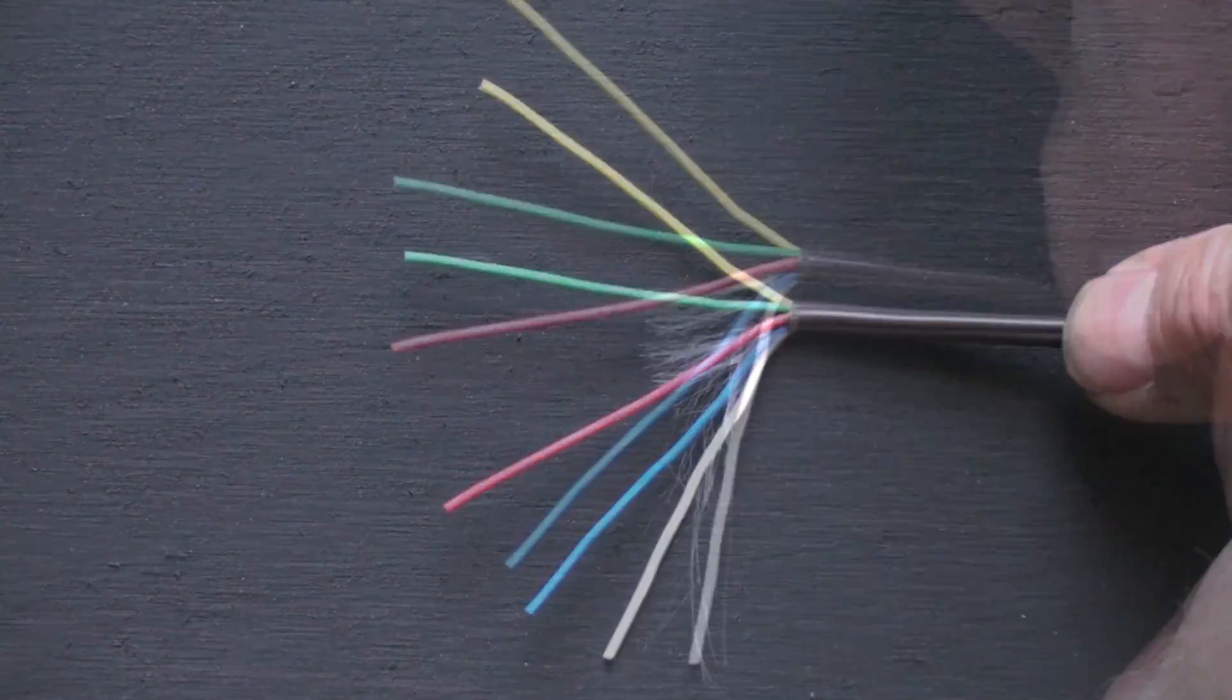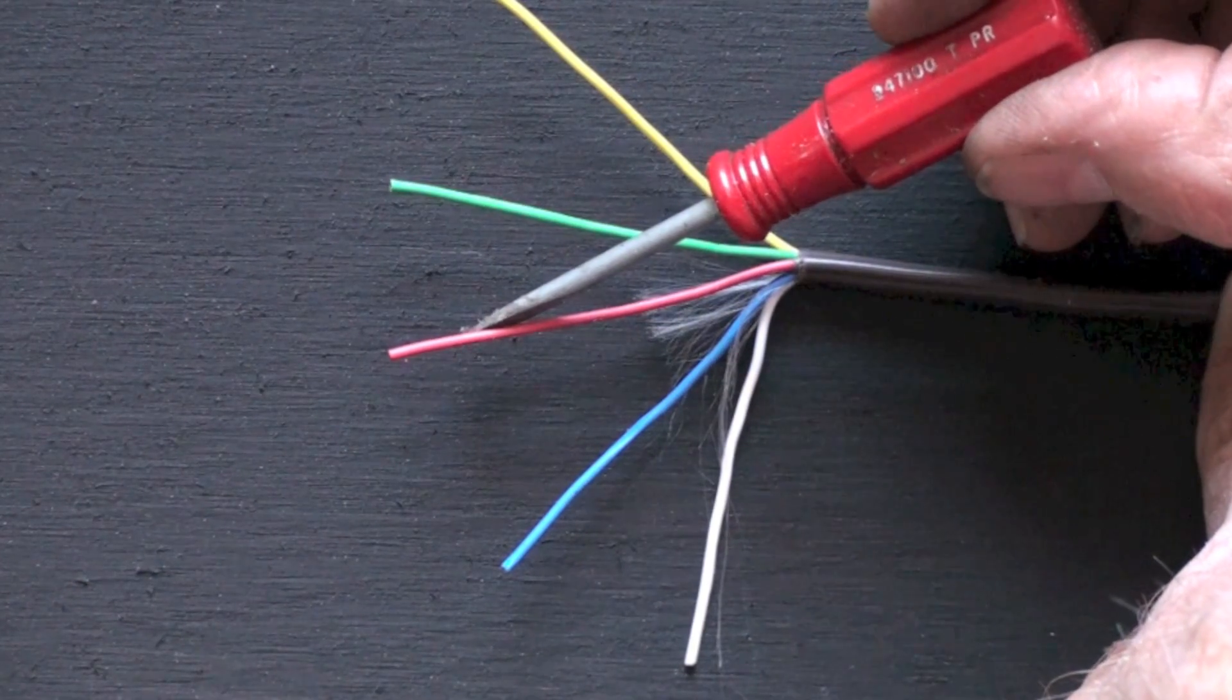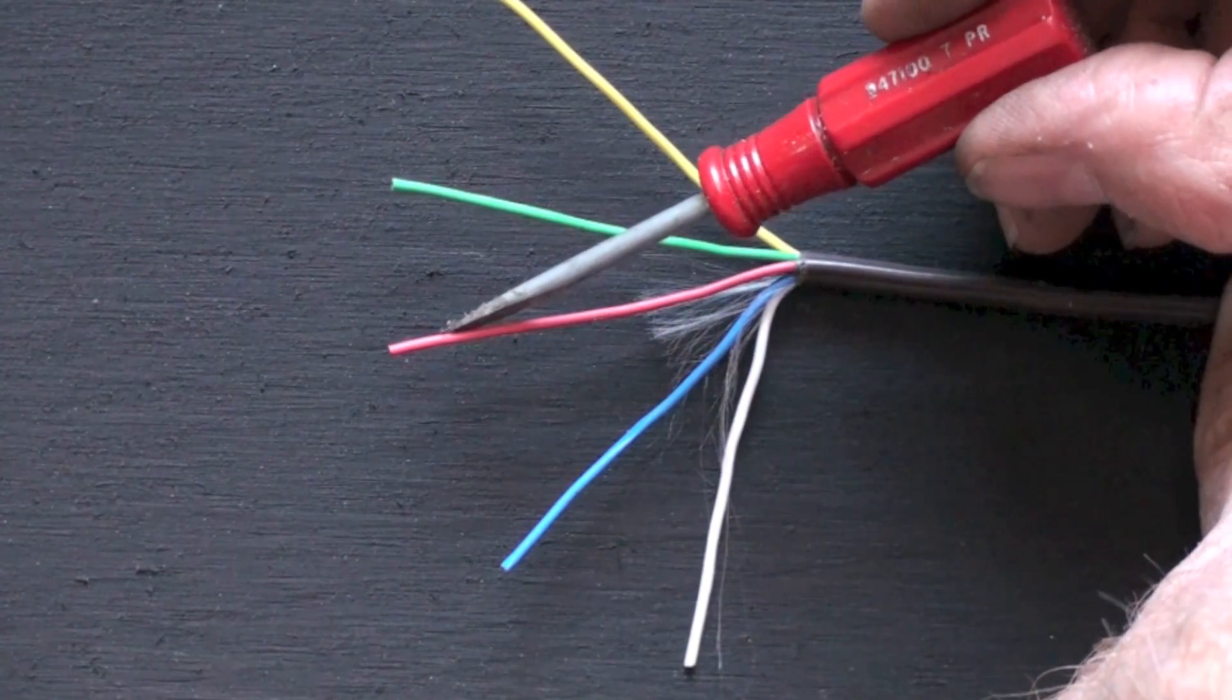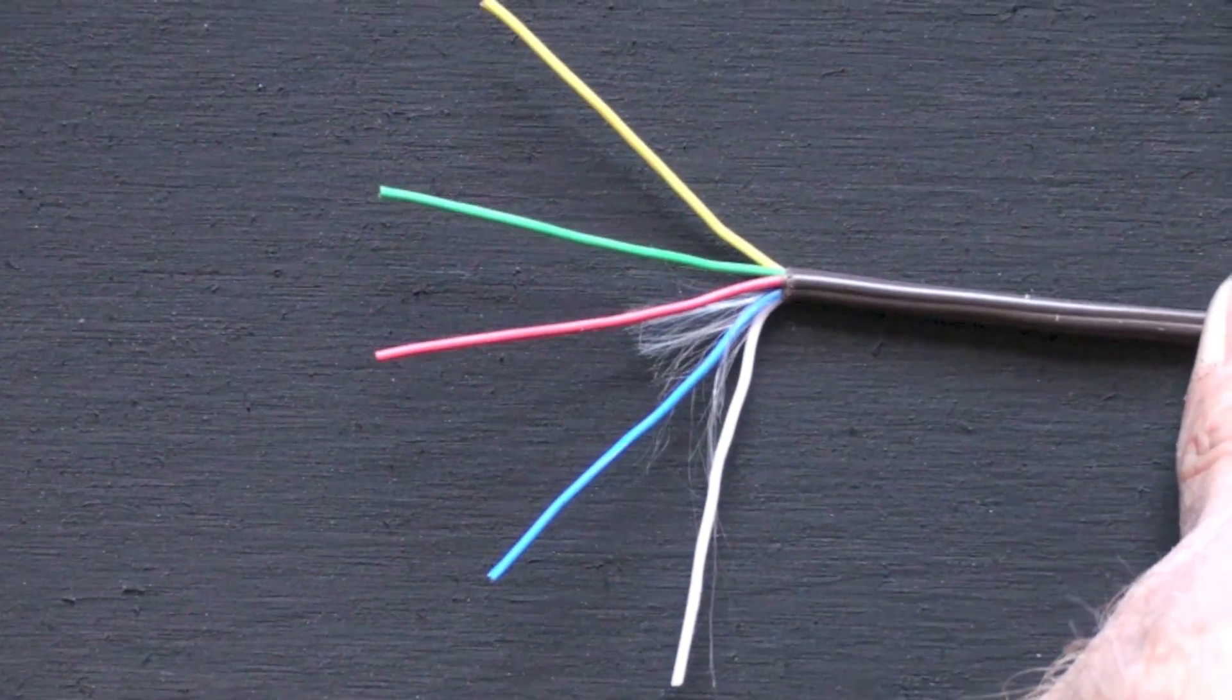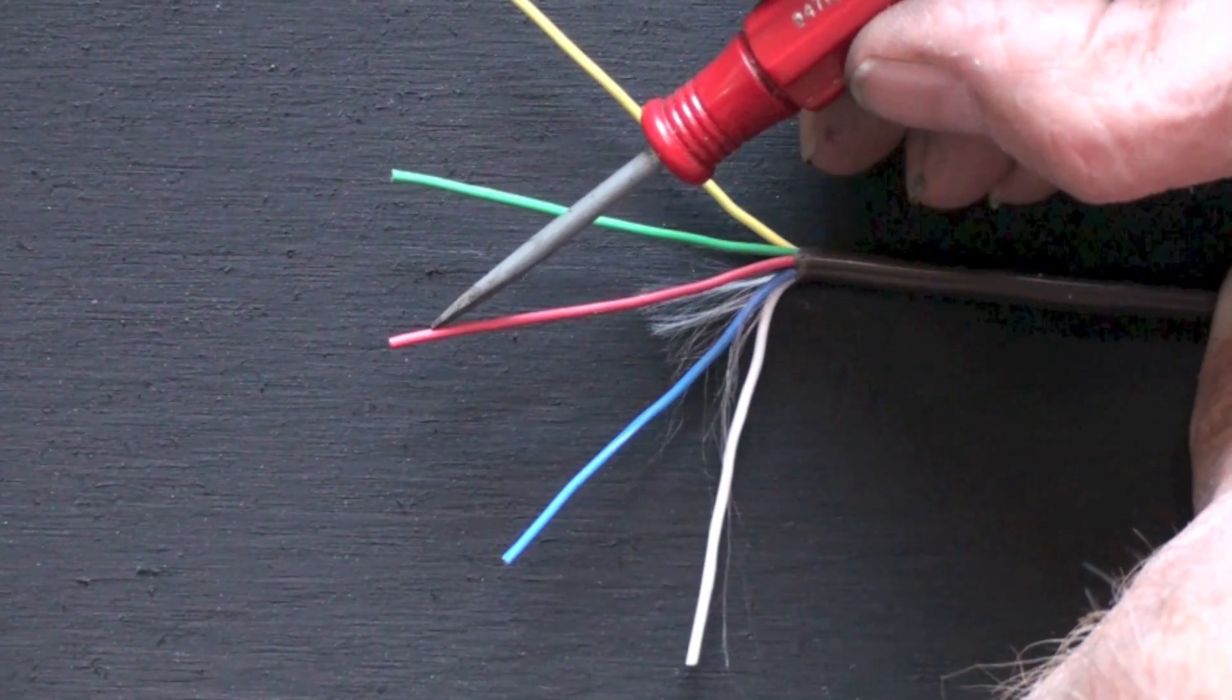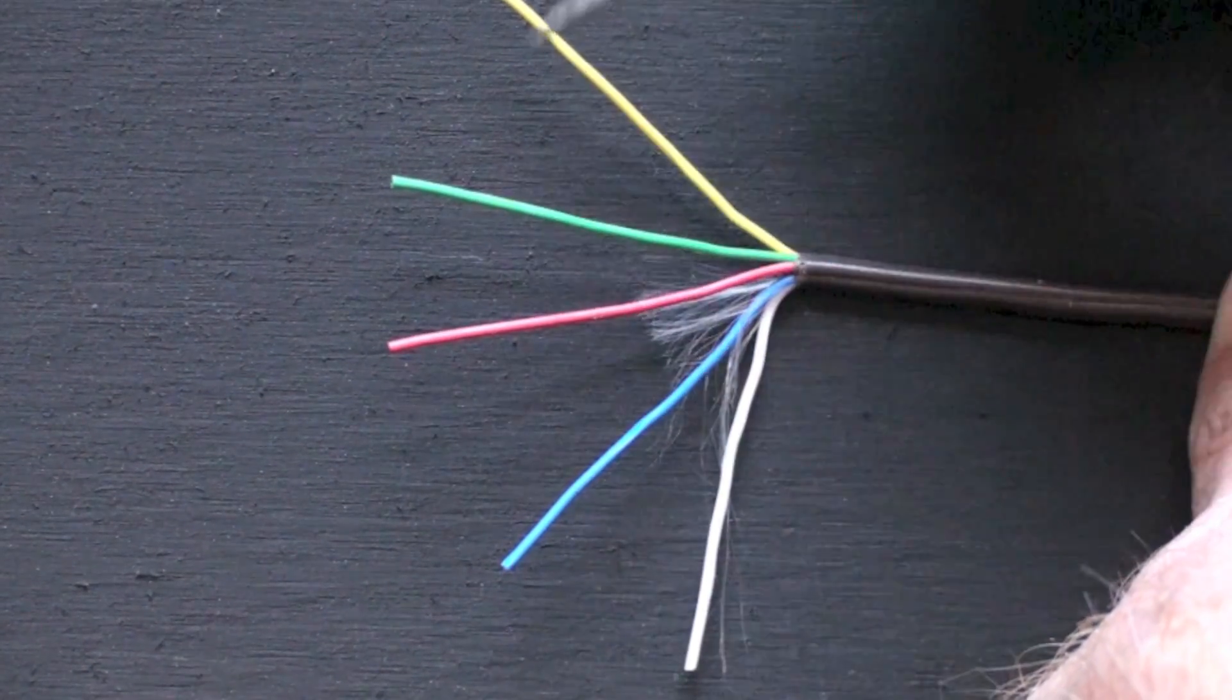Okay, the red wire is going to be your power lead. That's what's bringing power - let's say this is going to the thermostat - that's what's bringing power to the thermostat to be fed to any of these other wires.